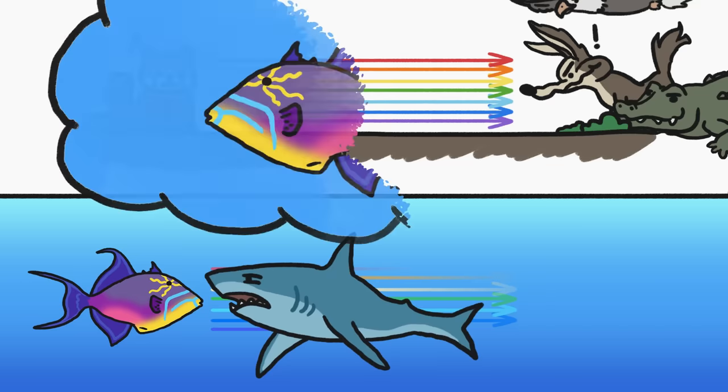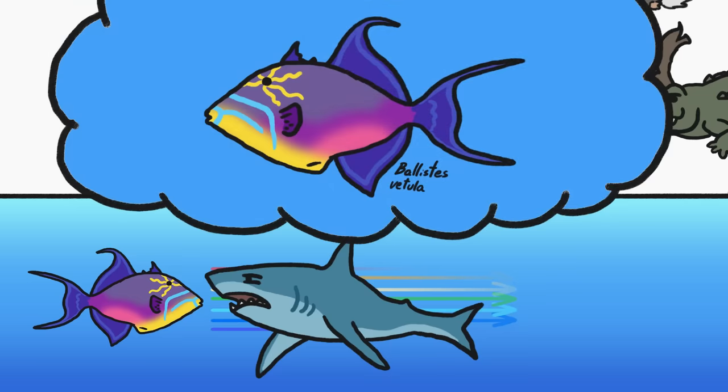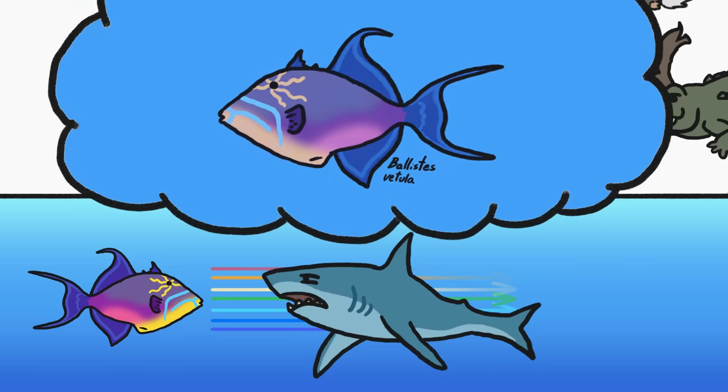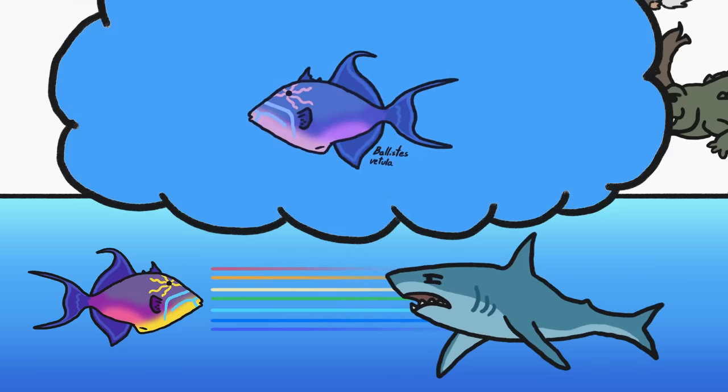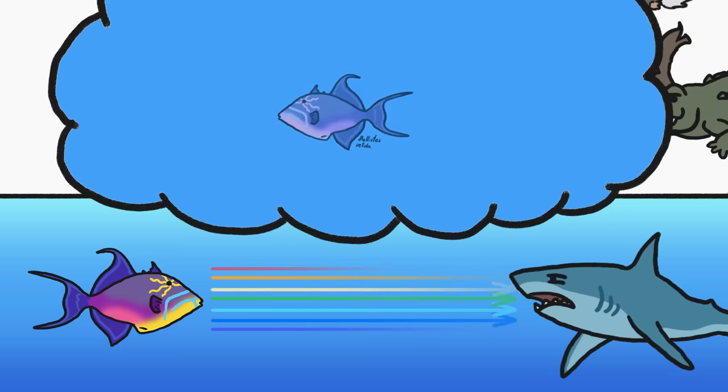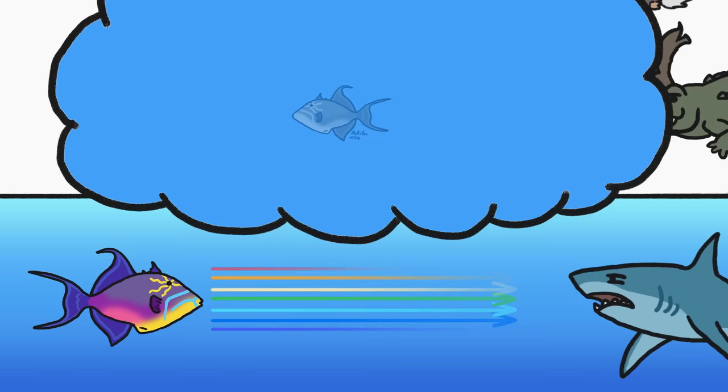So although up close this triggerfish is super colorful, from just a few meters away—about the distance most predators roam reefs looking for a meal—many of those bright colors totally disappear. The whole fish ends up looking bluish.